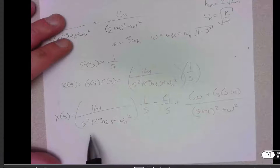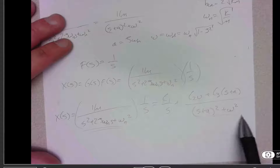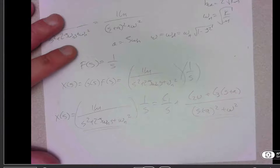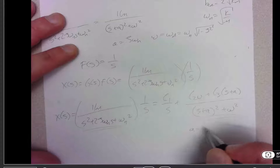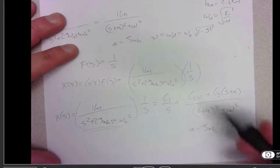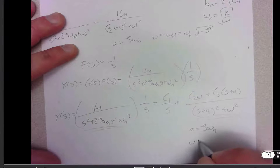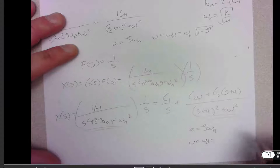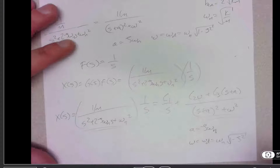For this partial fraction expression to be valid, the two sides must be equal. Working out the math as before, a is equal to zeta omega-n, and omega equals omega-d equals omega-n times the square root of 1 minus zeta squared.